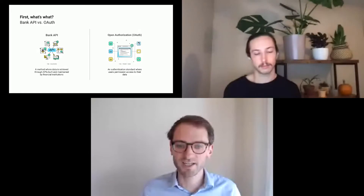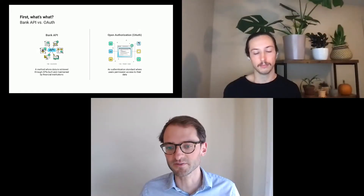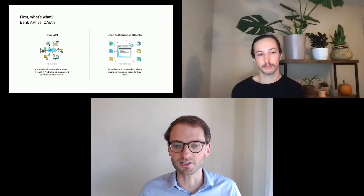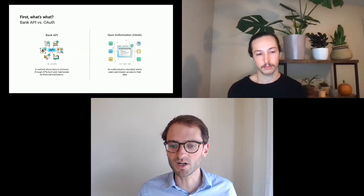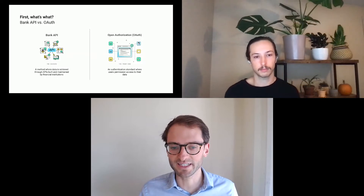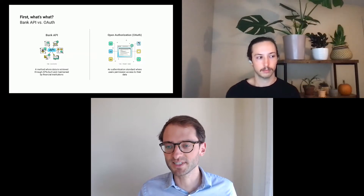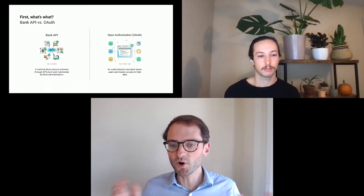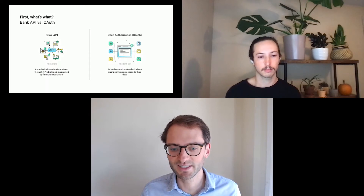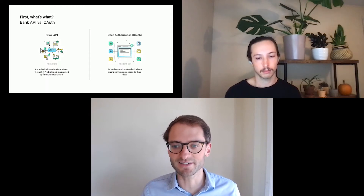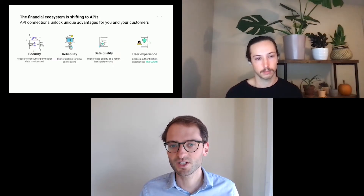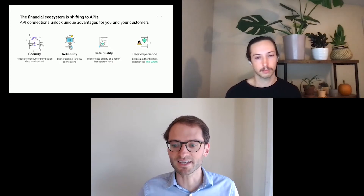In the simplest terms, a bank API allows us to ask the bank for a piece of information that they return to us and we pass along to you. The OAuth flow is one of the ways for the user to authenticate themselves on the bank website to allow this transfer of information to take place. Both of these are increasingly common and come with a bunch of exciting advantages.